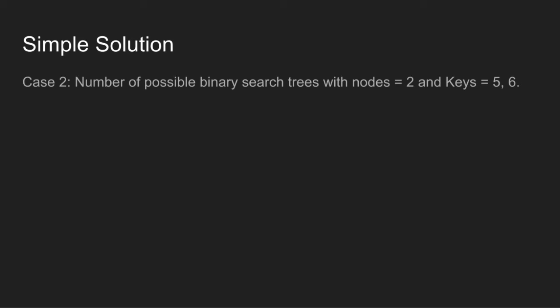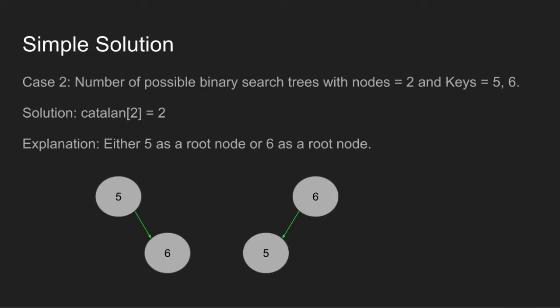Case 2 is to find number of possible binary search trees where nodes are 2 and keys are 5 and 6. There are 2 possible trees. So Catalan of 2 is 2.